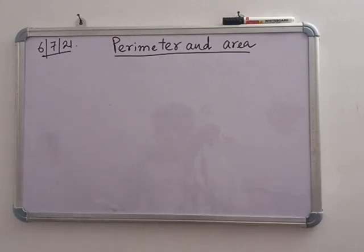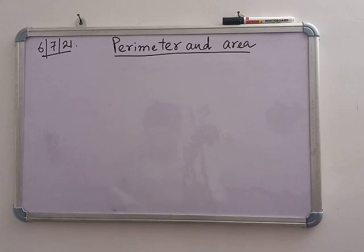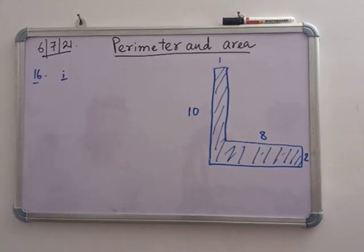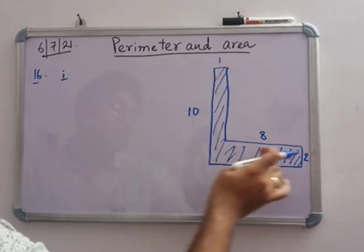Today we are going to discuss number 16. In number 16, you have to calculate the area of the shaded region. There are 5 different types of figures. You have to find the area of each region, and I am doing them one by one. Now, in this first figure, you have to find this shaded region.